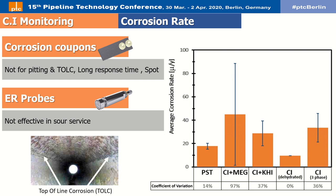Consequently, a diligent dynamic test method is required to evaluate an inhibitor's performance in preventing top-of-line corrosion. On the other side, at the bottom of the pipeline, there is a risk of corrosion under deposit where organic deposit accumulation is likely and inhibitor diffusion is minimal.